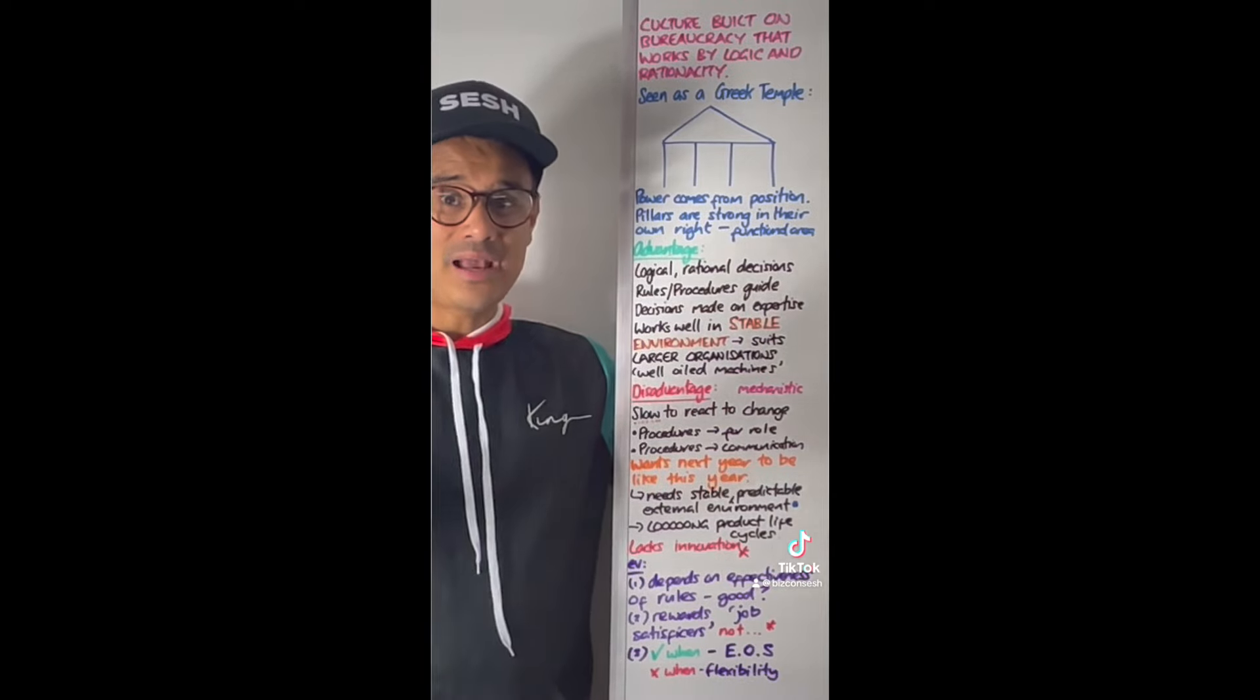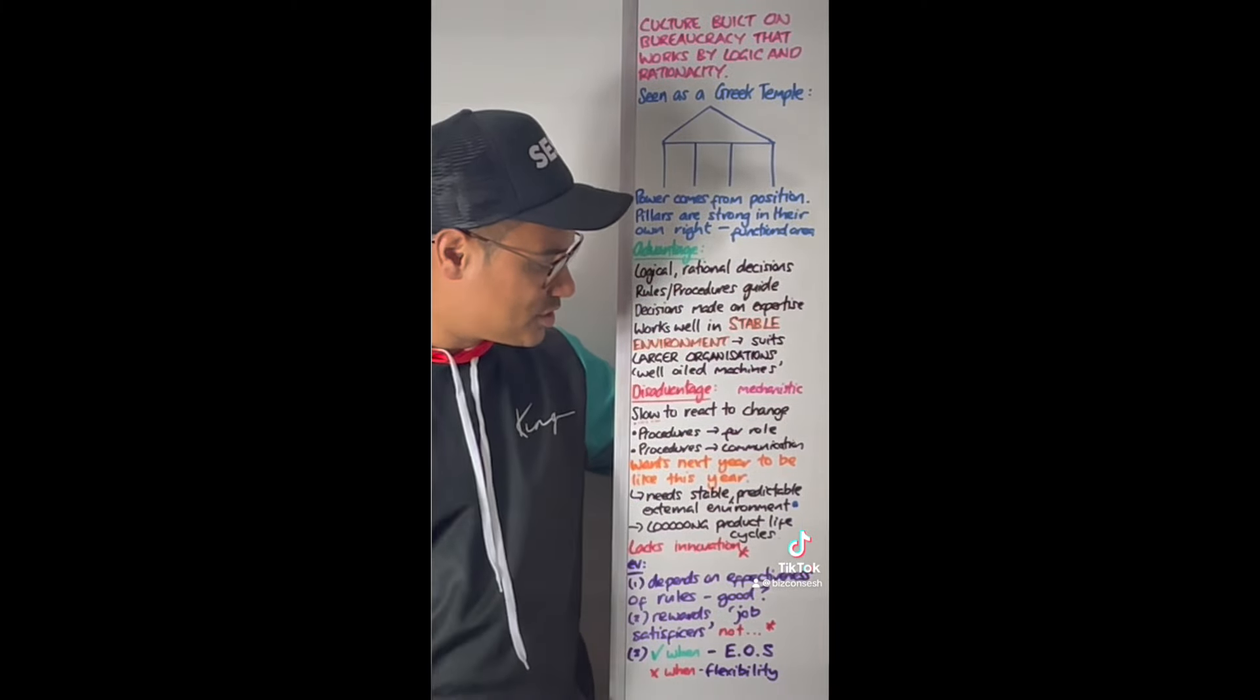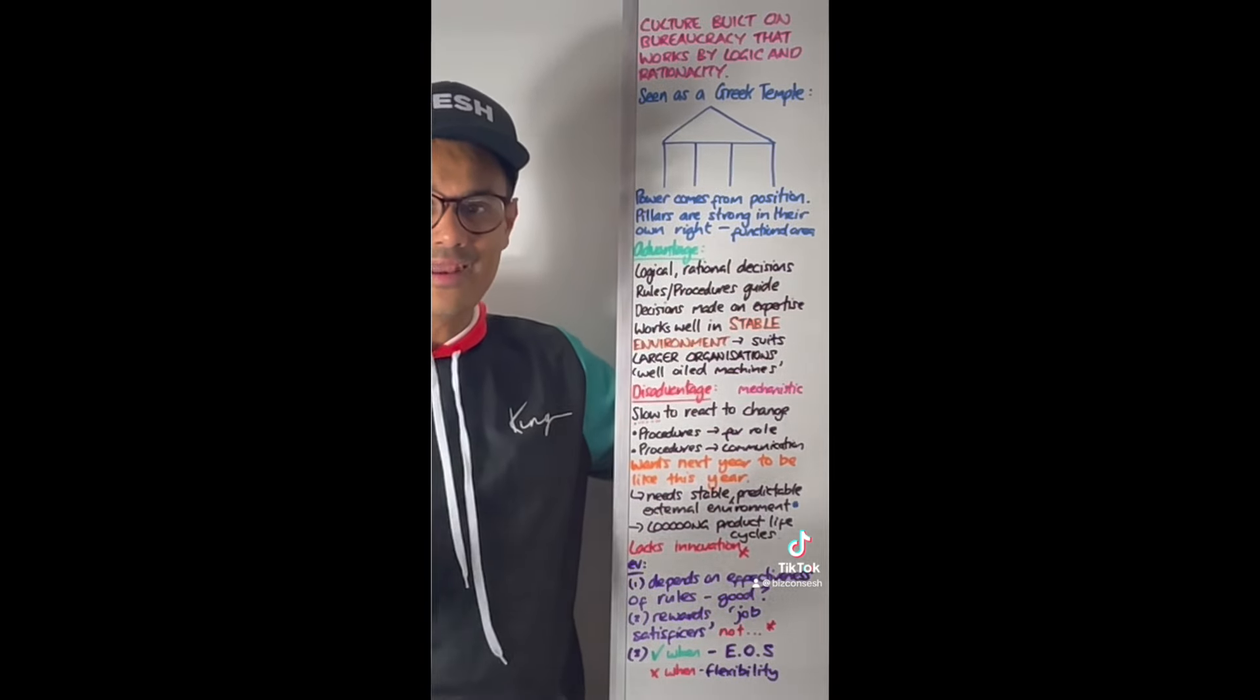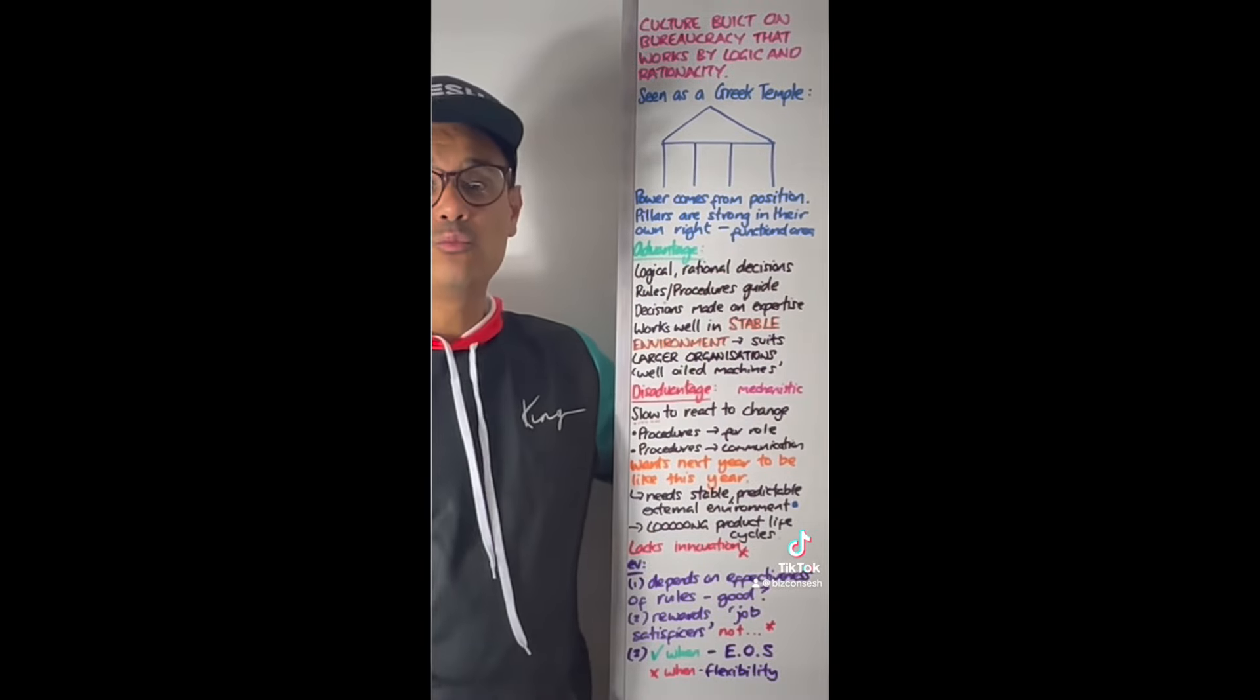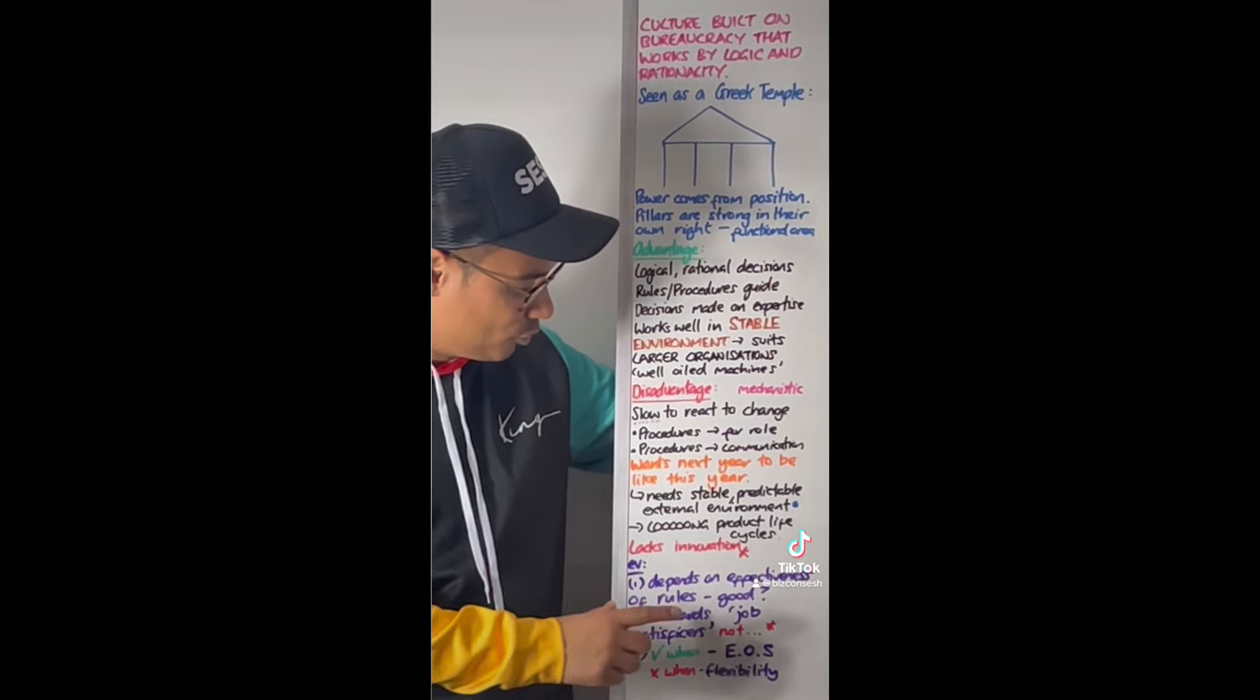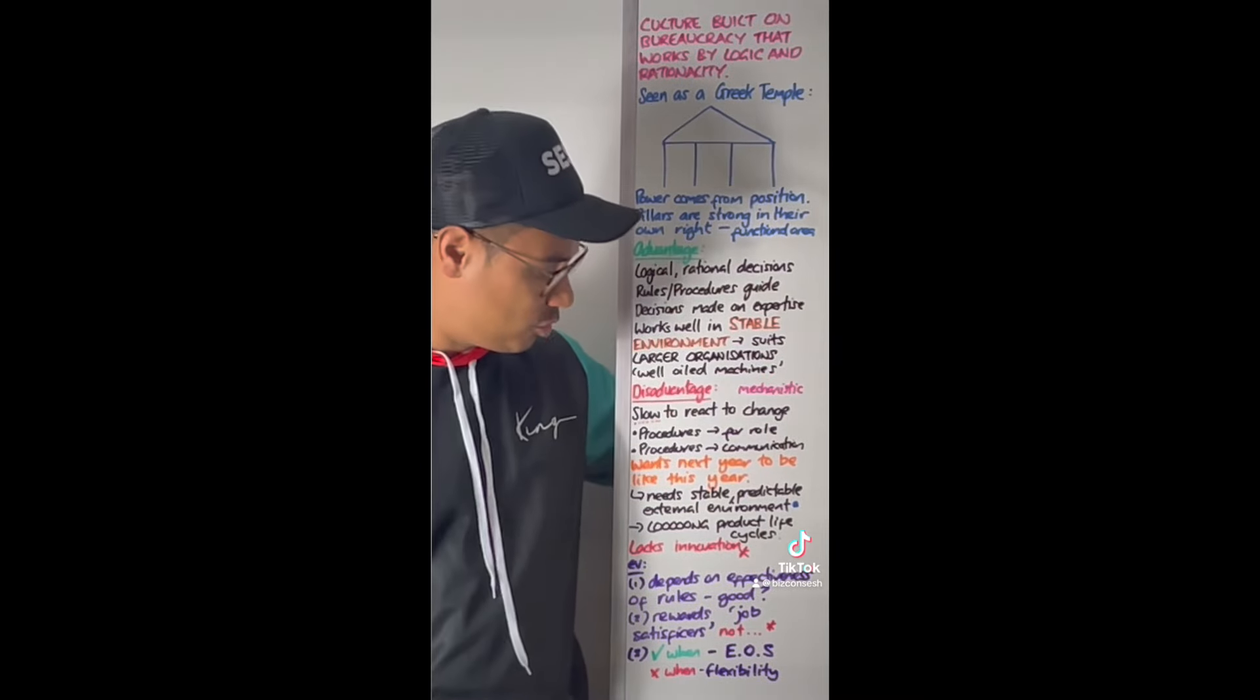Disadvantages: the mechanistic nature is a disadvantage because it's slow to react to change. When there's procedures for a role, you need to follow those procedures, those rules. If you want to communicate, you need to follow those procedures, so there's always a delay in any decisions that are made. This type of culture wants last year and this year to be exactly the same as next year. It wants stability. Like a Greek temple with shaky ground, the temple will crumble.